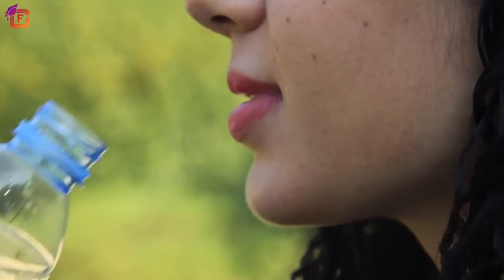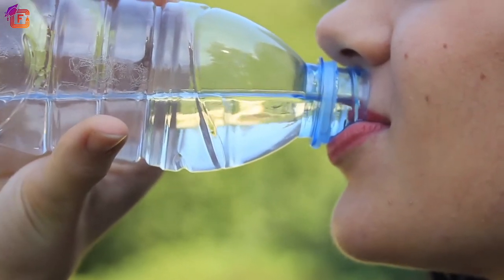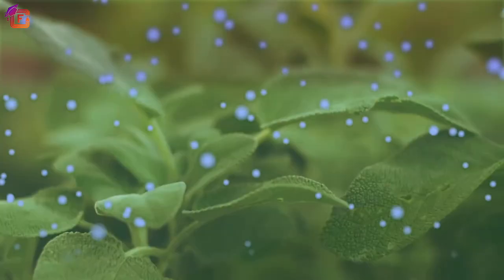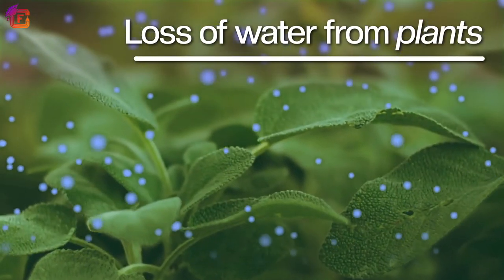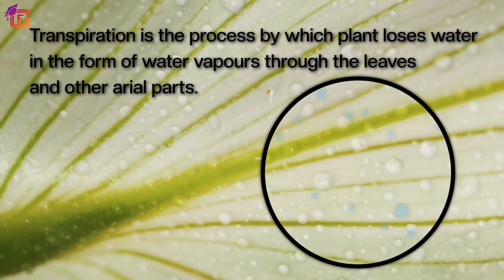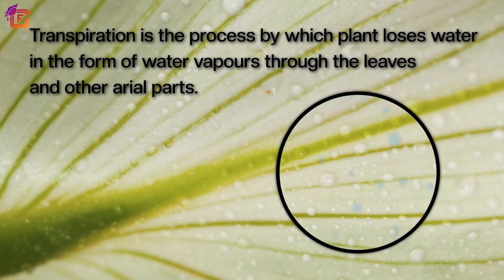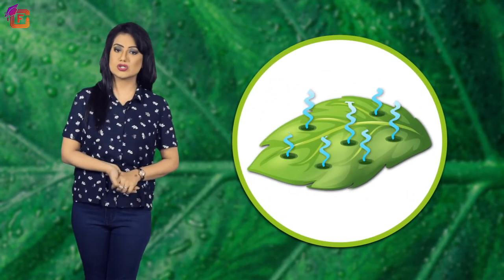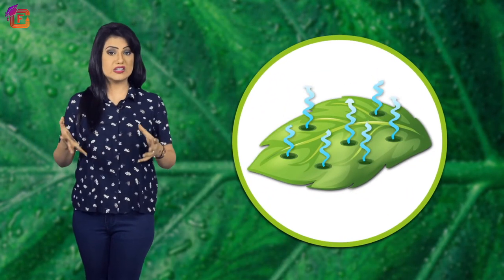Body loses water content through these processes, so it is important to drink water regularly. In this chapter we will learn about loss of water from plants. Transpiration is the process by which plants lose water in the form of water vapors through the leaves and other aerial parts. It is the evaporation of excess water from the leaf surface.